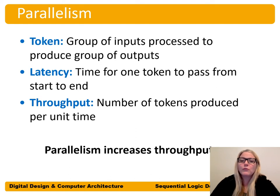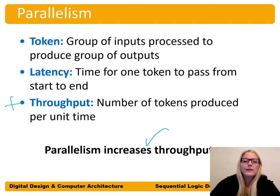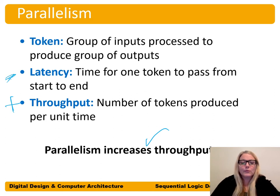A token is a group of inputs for a process to produce a group of outputs. Latency is the time for a token to pass from the start to the end of a system — to complete the entire calculation. Throughput is the number of tokens produced per unit time. Parallelism increases throughput, but it does not help with latency — the time for any given task to be done. In fact, it usually makes latency a bit worse.